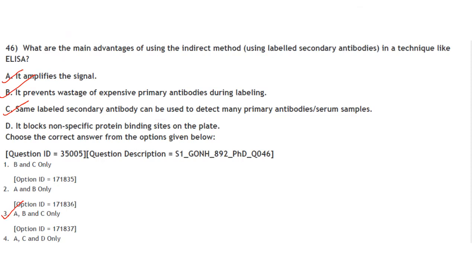Main advantages of using the indirect ELISA method: it amplifies the signal; it prevents wastage of expensive primary antibody during labeling; the same labeled secondary antibody can be used to detect many primary antibody serum samples. Blocking non-specific protein binding sites is not an advantage of indirect ELISA. Answer is A, B and C only. Option 3.